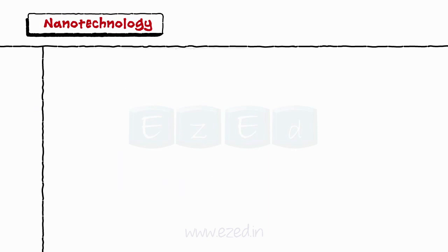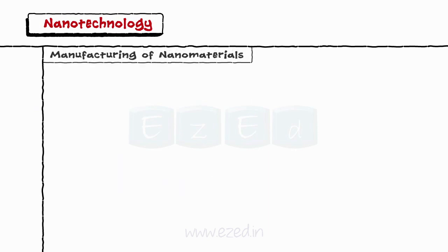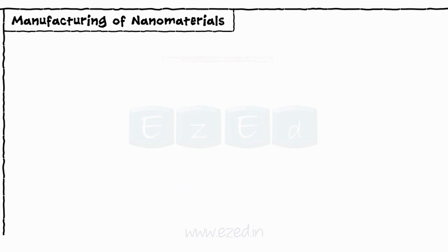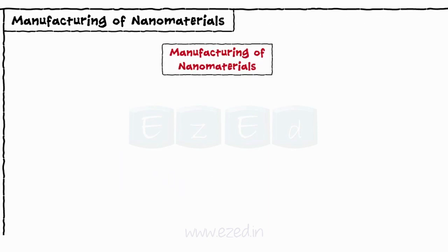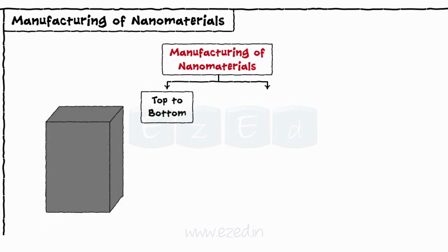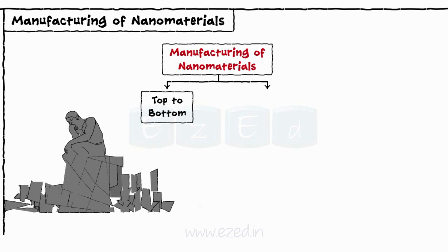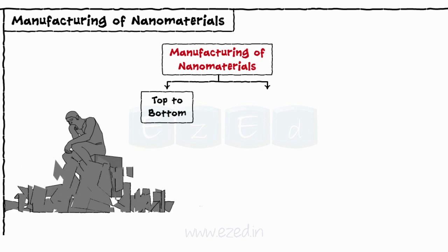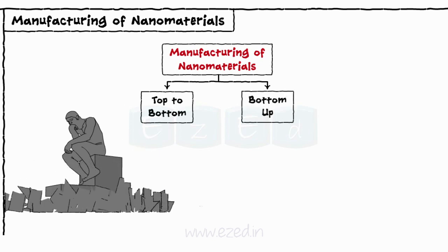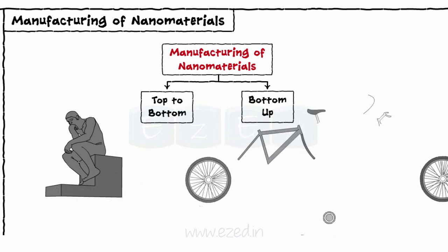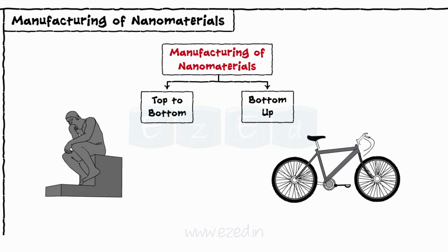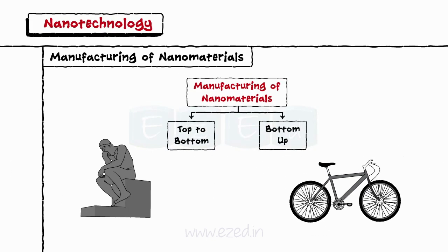Let's study the manufacturing of these nanomaterials. They can be manufactured by two methods. Top-down: building something by starting with a larger piece and carving away the material, like a sculpture. Bottom-up: building something by putting together smaller pieces, like a bicycle or a car engine.